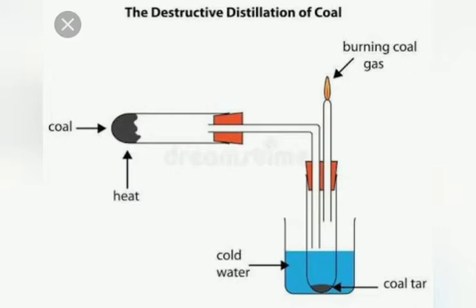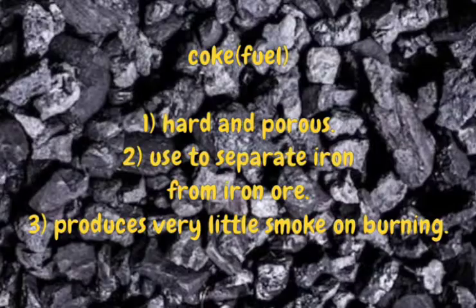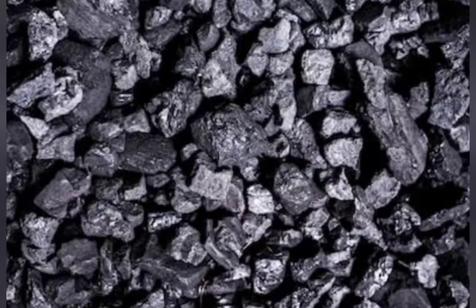When coal undergoes destructive distillation, we get three products. Number one is coke. Coke is in the form of fuel — it is hard and porous. It is used to separate iron from iron ore. When we burn this coke, it does not produce smoke.